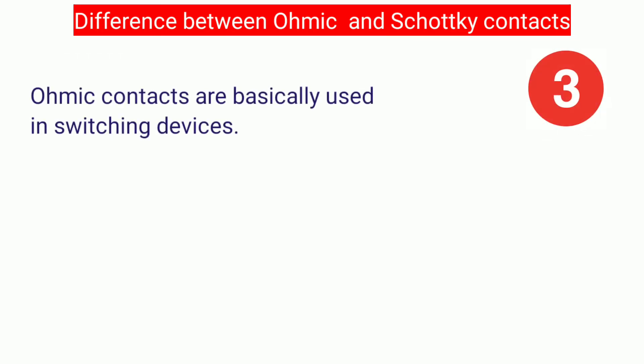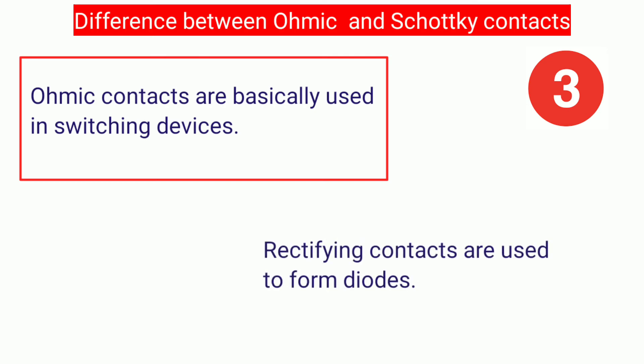Here is the third point of difference between the two. Ohmic contacts are basically used in switching devices. Rectifying contacts are used to form diodes.